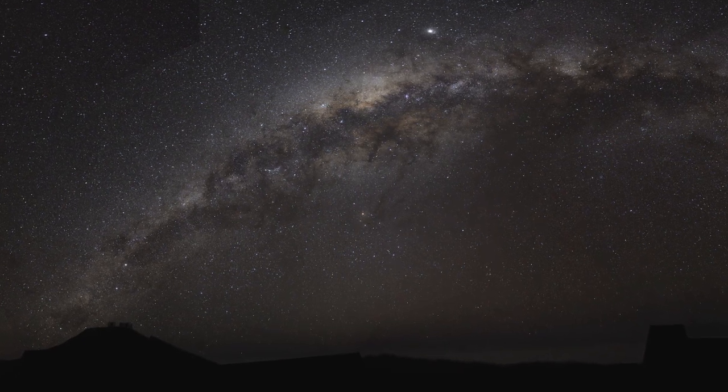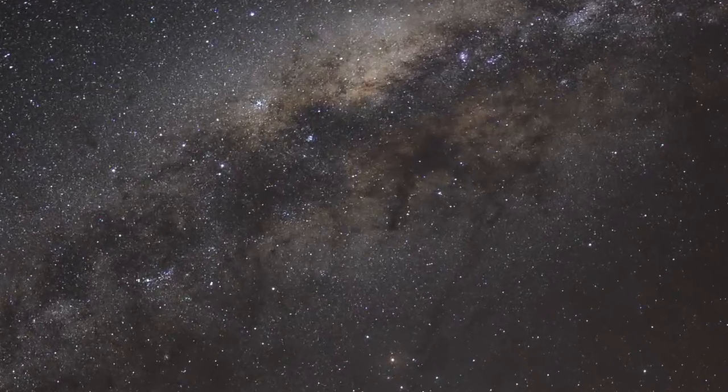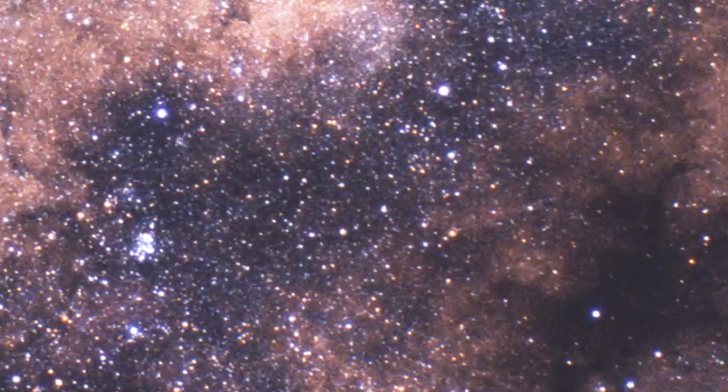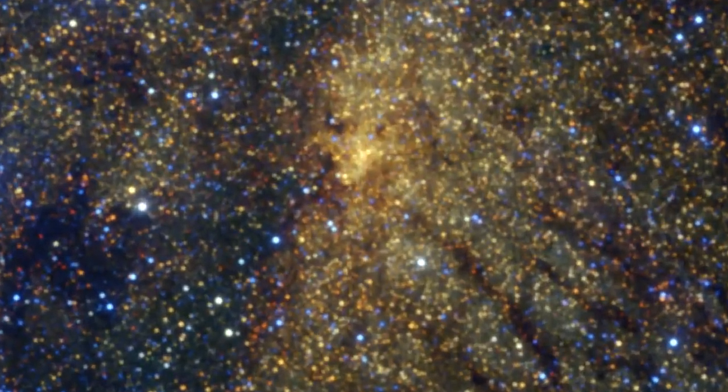Observers under dark skies far from the bright city lights can marvel at the splendour of the Milky Way arching in an imposing band across the sky. Zooming in towards the centre of our galaxy, about 25,000 light years away, you can see that it is composed of myriads of stars.